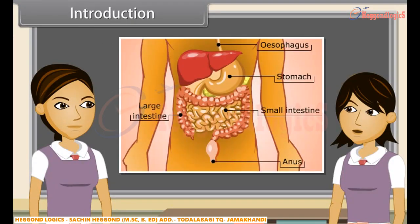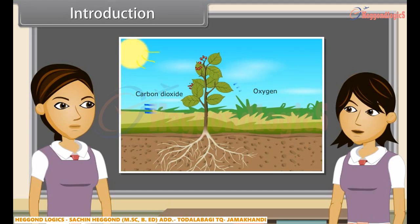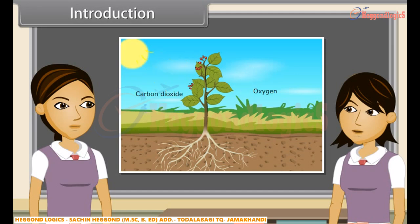We know that all organisms perform some basic functions to keep themselves alive. The basic functions performed by living organisms to maintain their life on this earth are called life processes. Since living organisms perform various functions to maintain their life, energy is required to perform these functions. They get this energy from outside the body in the form of food.